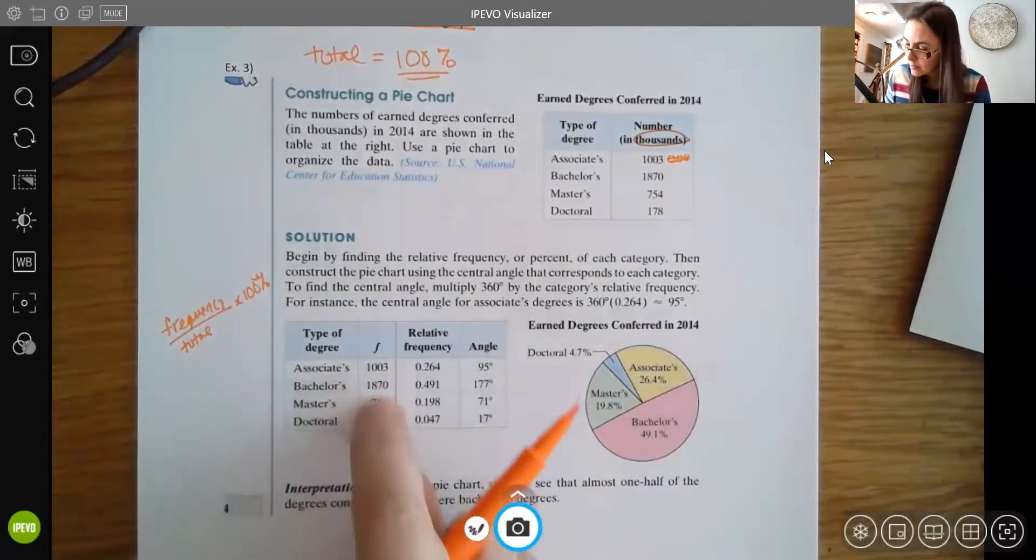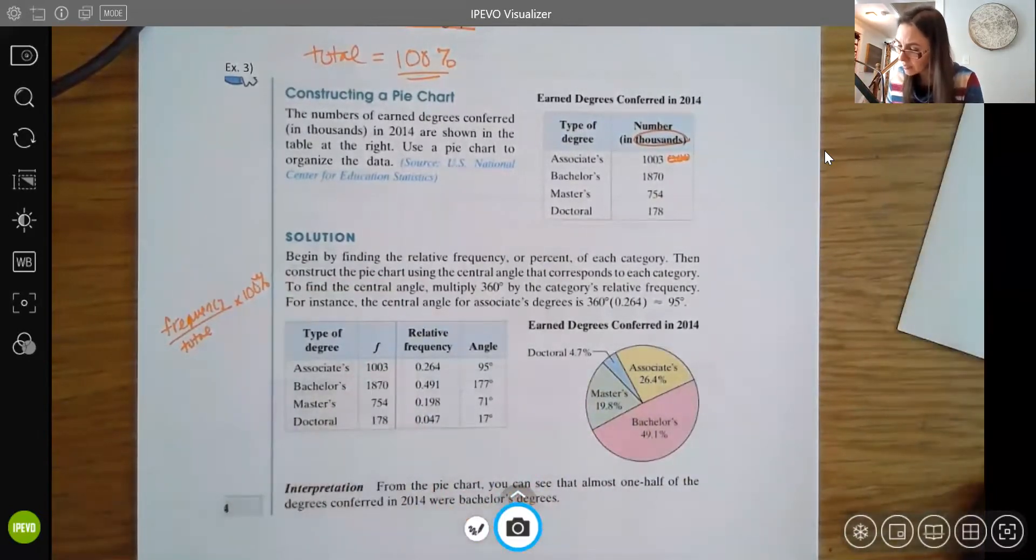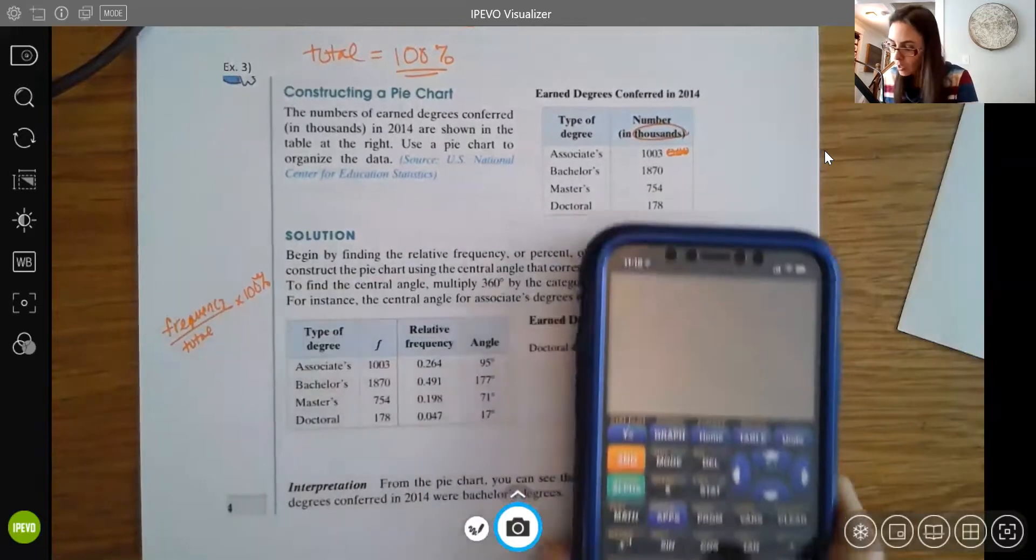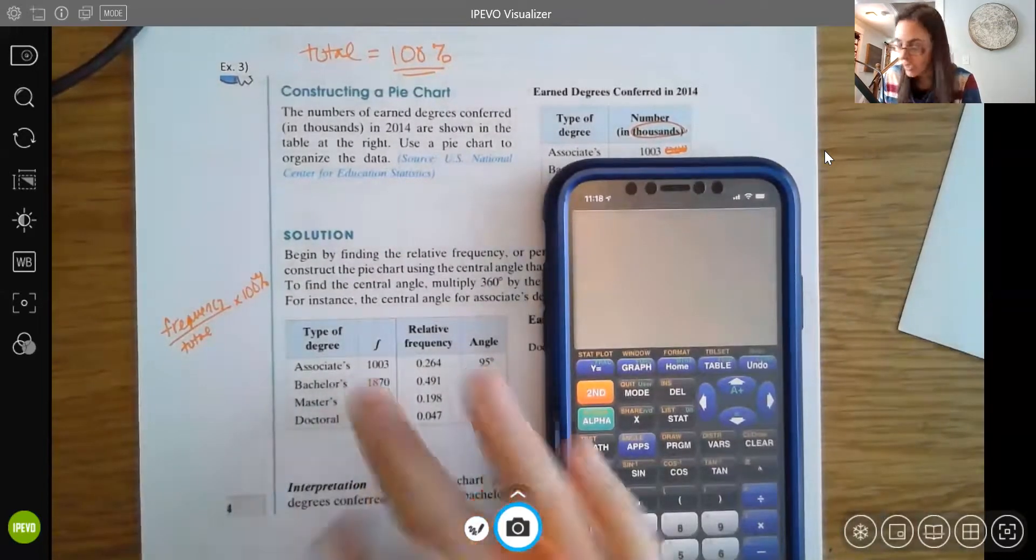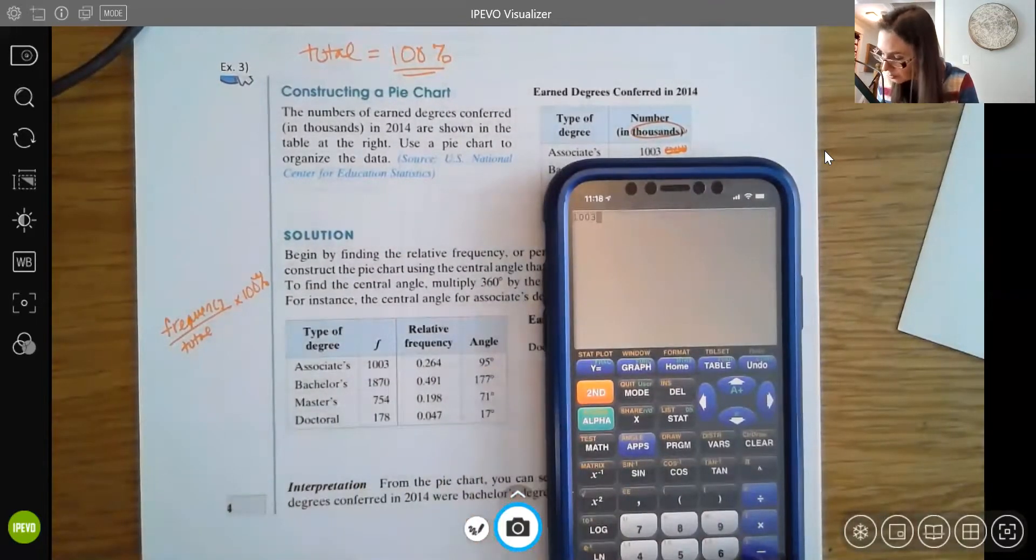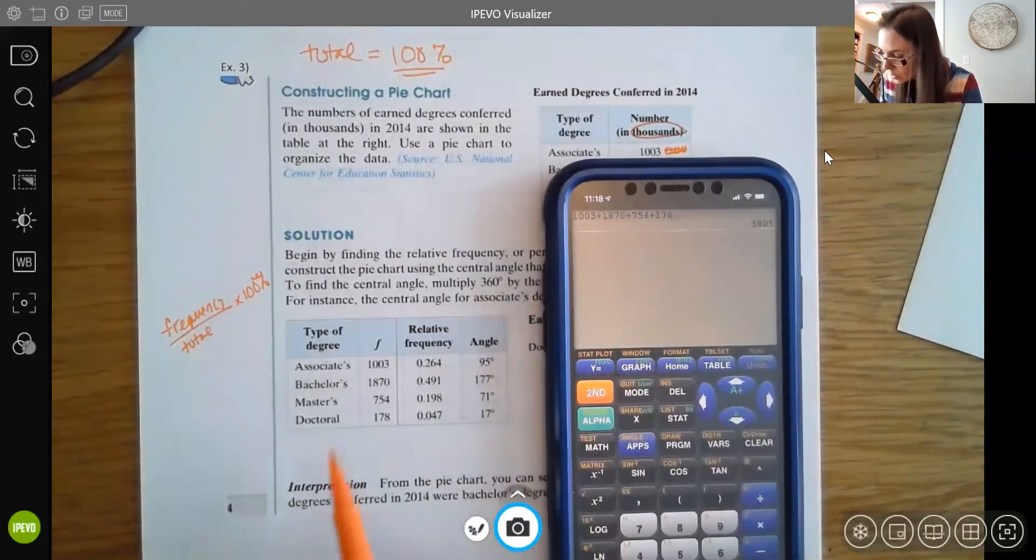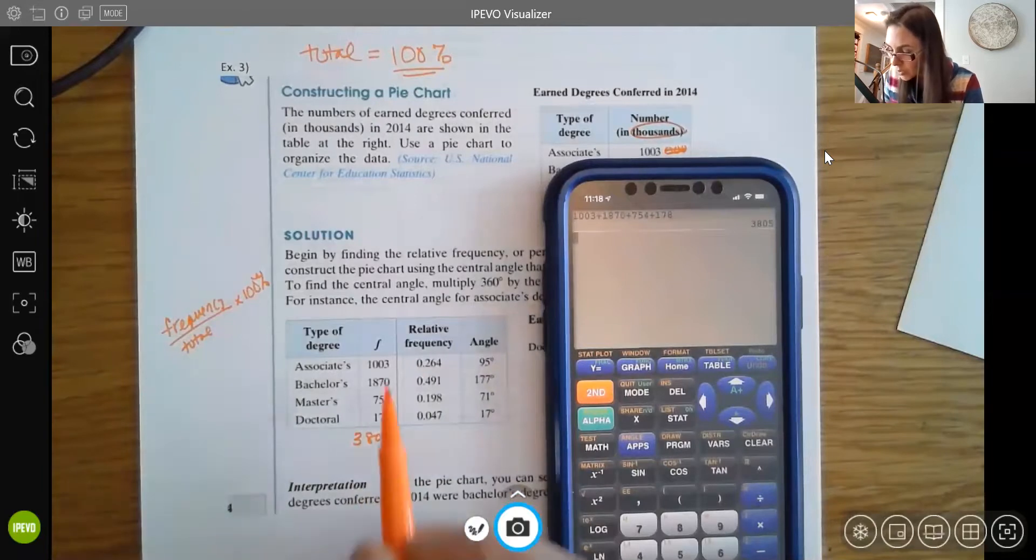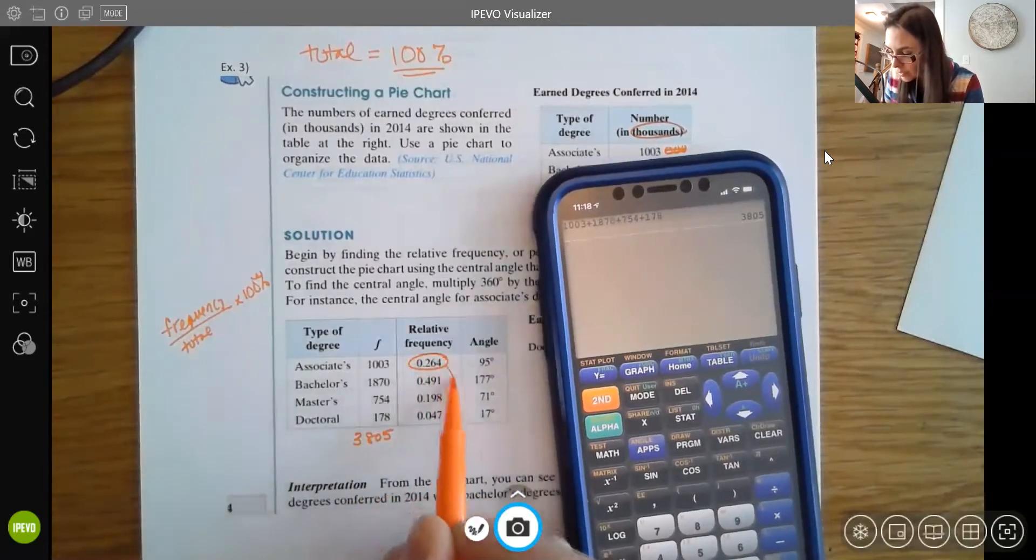So for instance, first thing I'd have to do is to find the total there. So I'm just going to get up my calculator. So I see that I have 1,003 plus 1,870 plus 754 plus 178. And when I add those all up, I get 3,805.